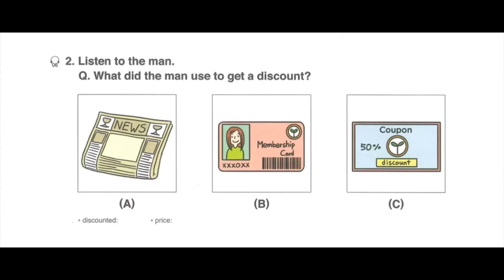Number 2, listen to the man: I bought a bag of potato chips at a discounted price because I had a coupon. What did the man use to get a discount?